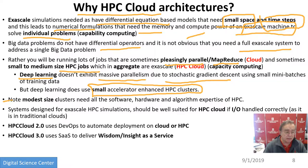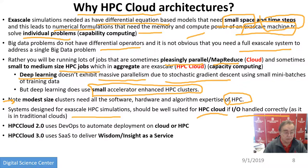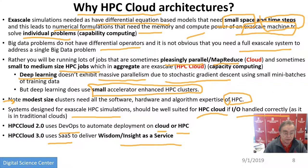You'll be running job mixes which include pleasingly parallel jobs, classic MapReduce, and small to medium sized HPC jobs to do machine learning. Clouds are probably an order of magnitude larger than supercomputers in total size. One example is deep learning, which doesn't need massive parallelism because stochastic gradient descent uses mini-batches. Deep learning needs small accelerator-based HPC clusters as currently implemented. It doesn't matter so much because even if you want to build a modest-sized cluster, you need all the software, hardware, and algorithm expertise you'd need for exascale.